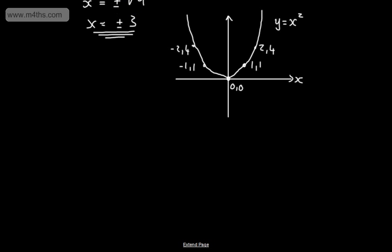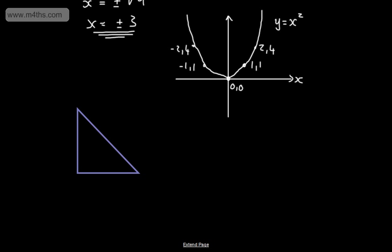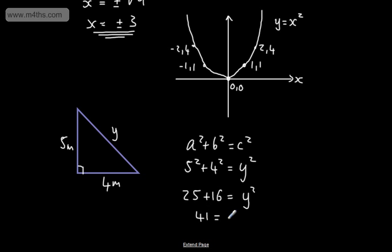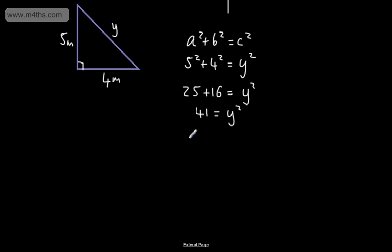Let's now look at a triangle. We'll say one side is 4 metres and another is 5 metres, and we want to find the value y — the hypotenuse. Using Pythagoras, a squared plus b squared equals c squared: 5 squared plus 4 squared equals y squared. That gives 25 plus 16 equals y squared, so 41 equals y squared. Taking the square root of both sides gives plus or minus the square root of 41 equals y.